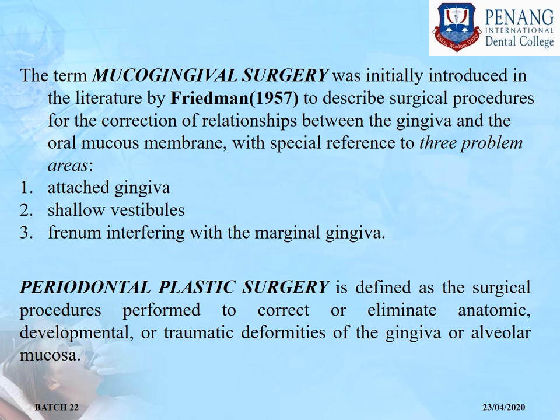The second term used is periodontal plastic surgery, which is defined as the surgical procedures performed to correct or eliminate anatomic, developmental, or traumatic deformities of the gingiva or alveolar mucosa.